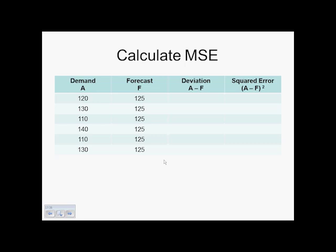So if we go to calculate our mean squared error, we are using the same information we had before. And we are going to take our six time periods again. We have already figured out the deviations, A minus F, as negative 5, 5, negative 15, 15, negative 15, and 5 from our different time periods. And we now need to square that.